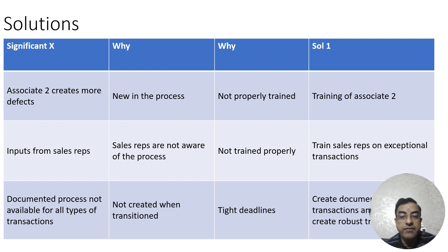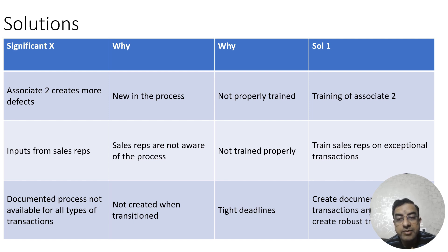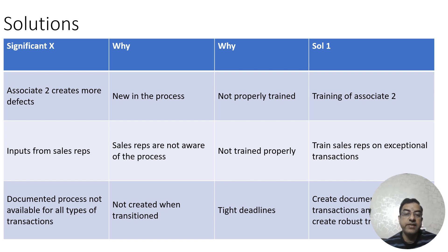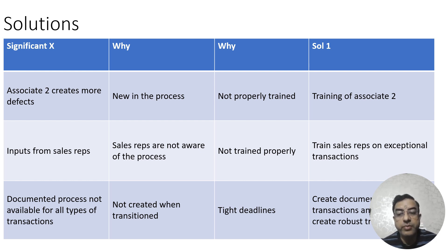The next significant X was inputs from sales representatives. Why were they giving wrong inputs? They were also not aware of the process and not properly trained. So training of sales representatives on exceptional transactions was implemented as a solution. The next significant X was that documented processes were not available for all types of transactions — why? Because they were not created during transition due to tight deadlines. The solutions are to create documents for processes lacking documentation and to create a robust transition plan to avoid this error in future.